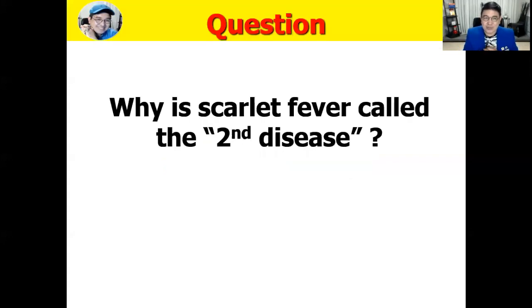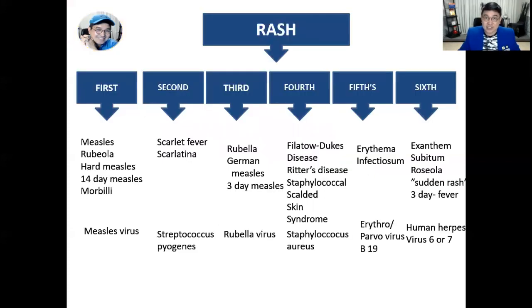Here's a question: why is scarlet fever called the second disease? Because there are actually six disease conditions that are all manifested mainly by the presence of a rash. We have first, second, third, fourth, fifth, and sixth. What is considered as the first disease is measles, otherwise known as rubiola, or hard measles, or 14-day measles, or morbilli.